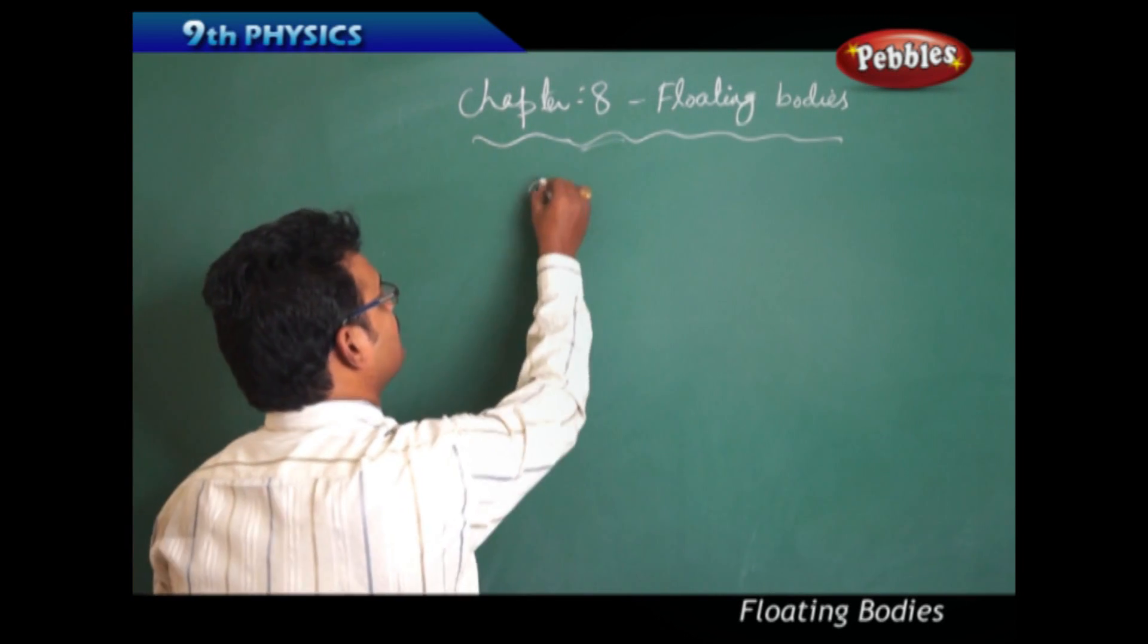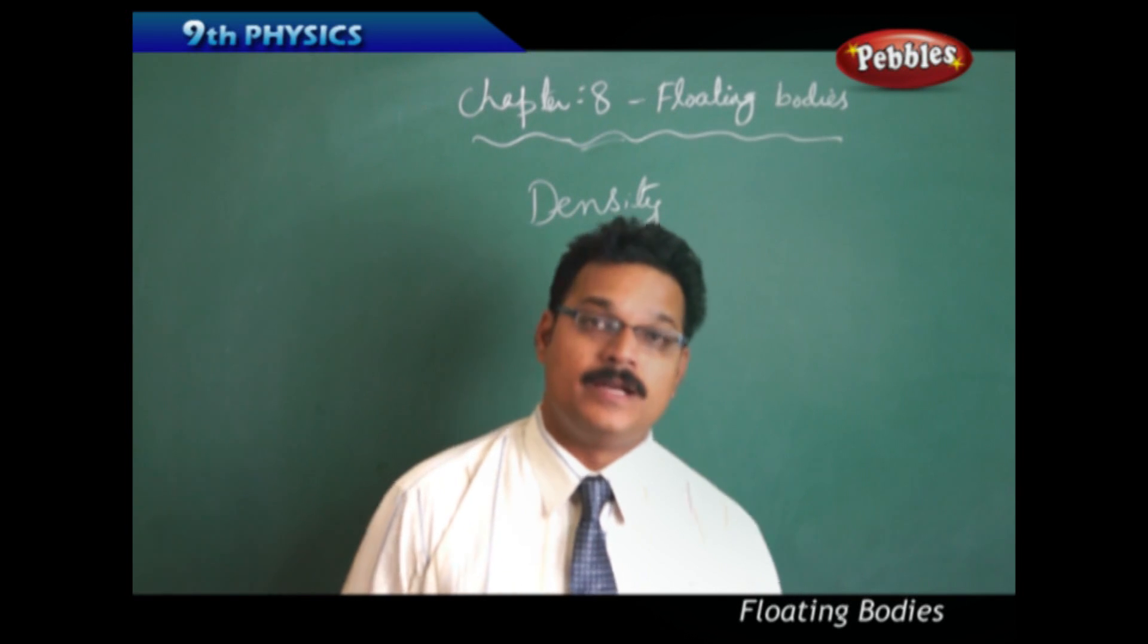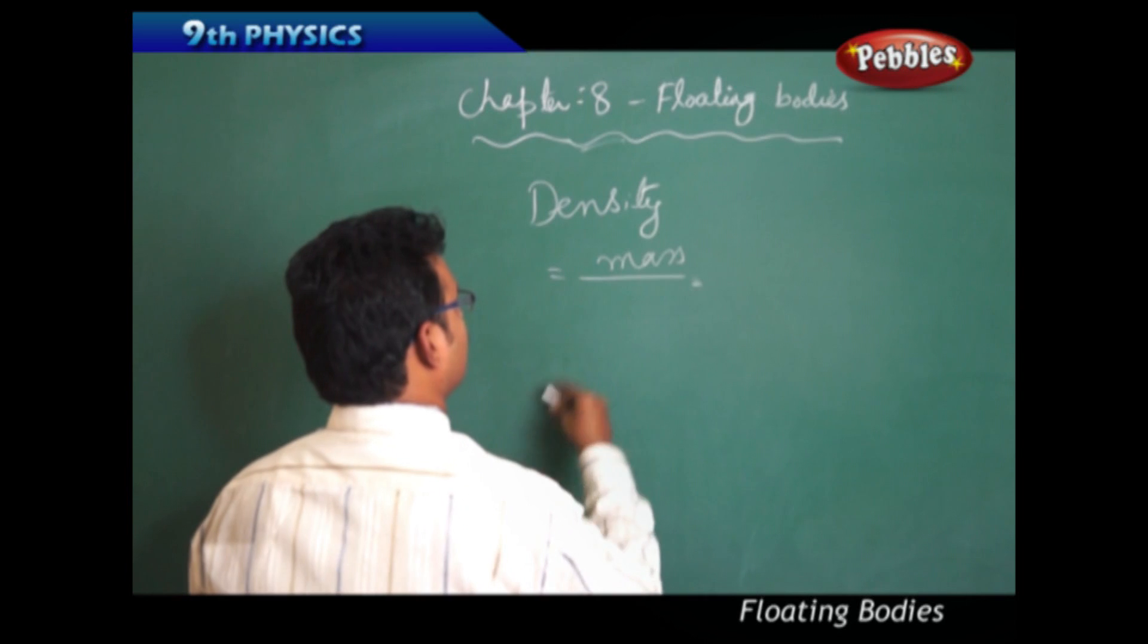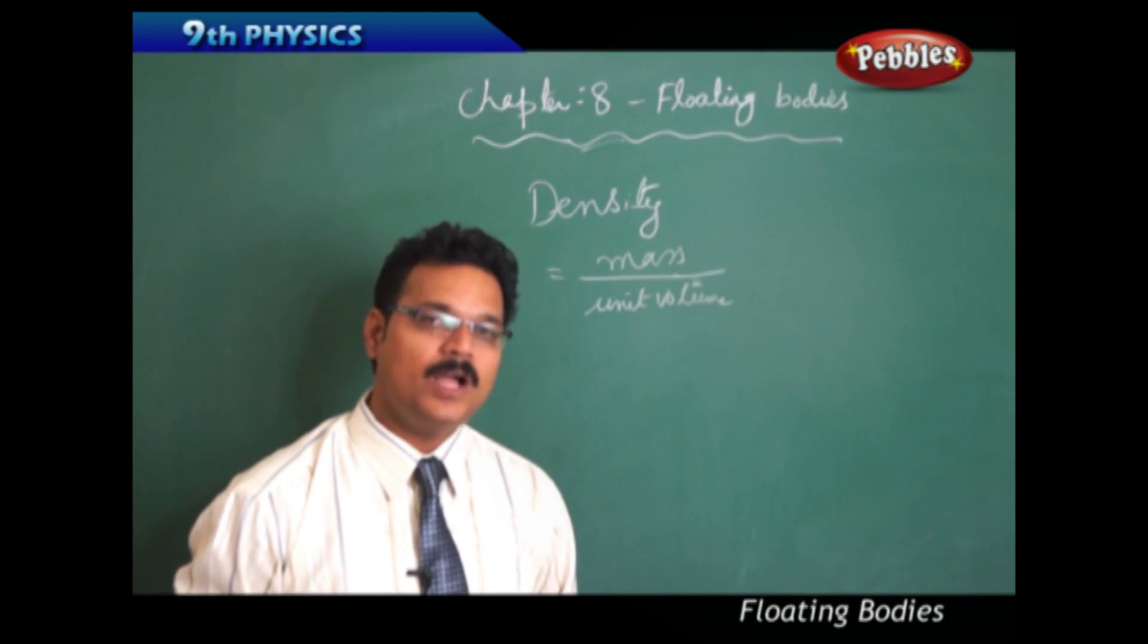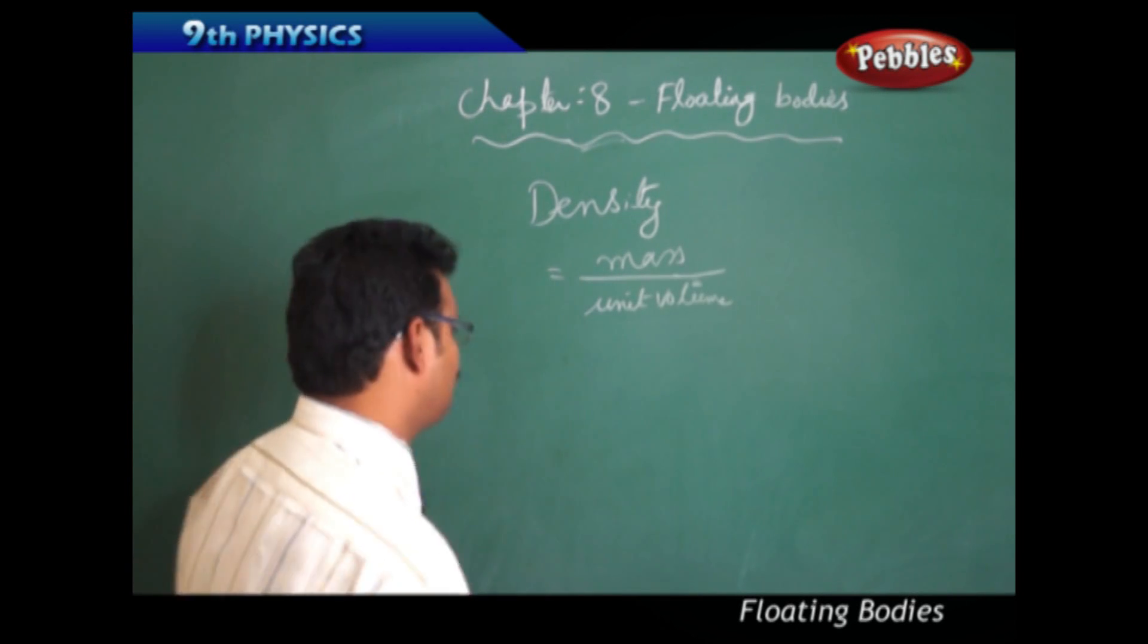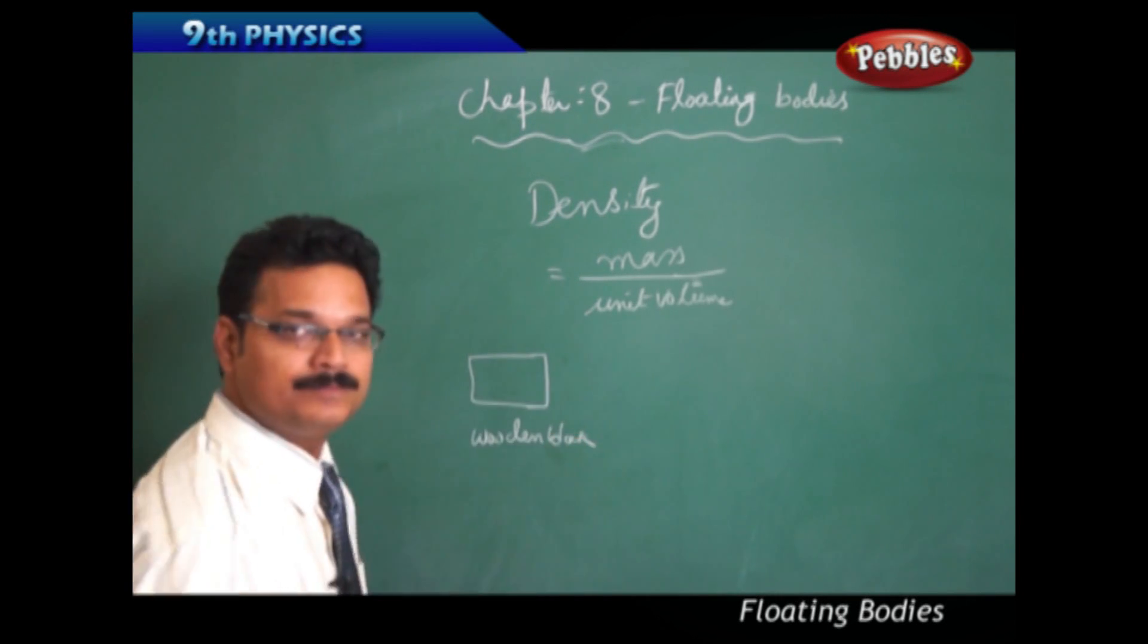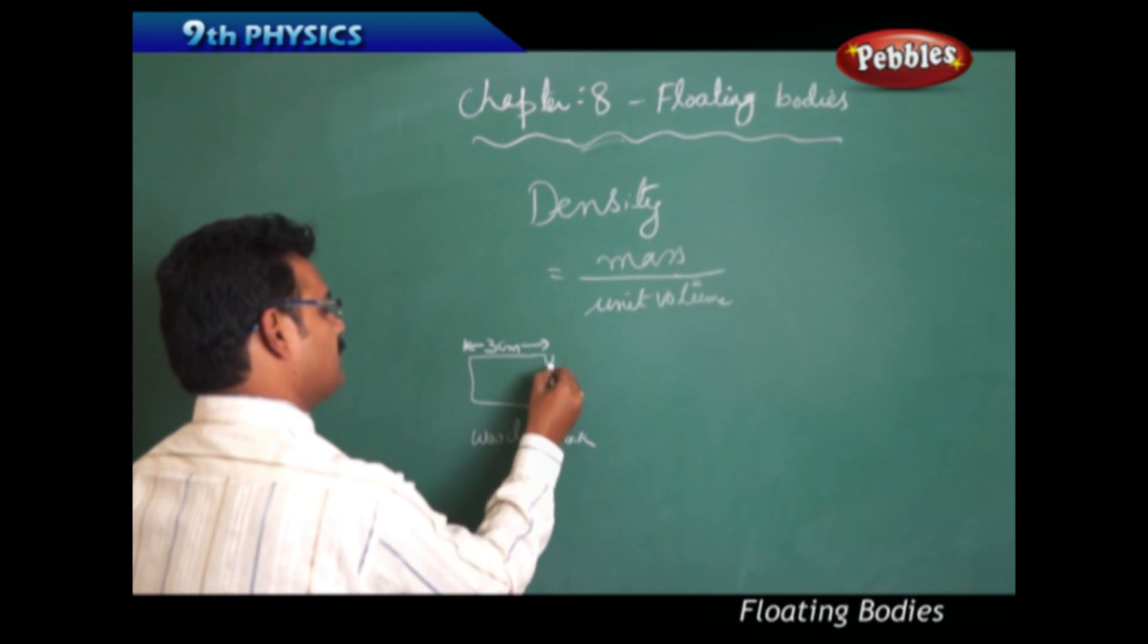Density is a physical quantity in physics and it is defined as mass per unit volume, or you can say that it is a ratio of mass to the volume. For example, take a block like this: it is a wooden block of rectangular shape whose length is 3 centimeters and this dimension is 1 centimeter.